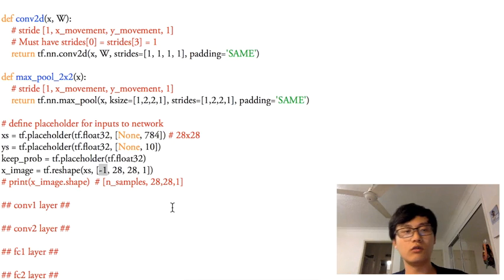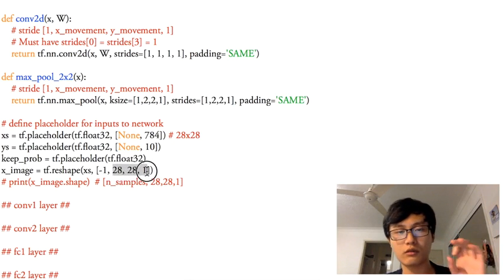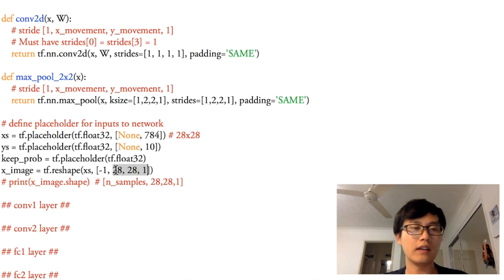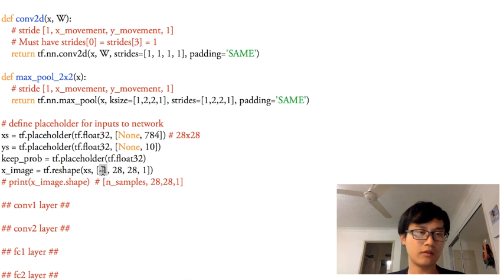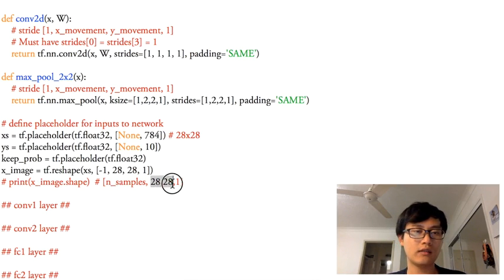The minus one means the batch size. We reshape the last three dimensions and leave the rest as the sample size — that's what the minus one means. If you print the x image shape, you'll get N samples (the batch size) and 28×28×1, which is the image size.